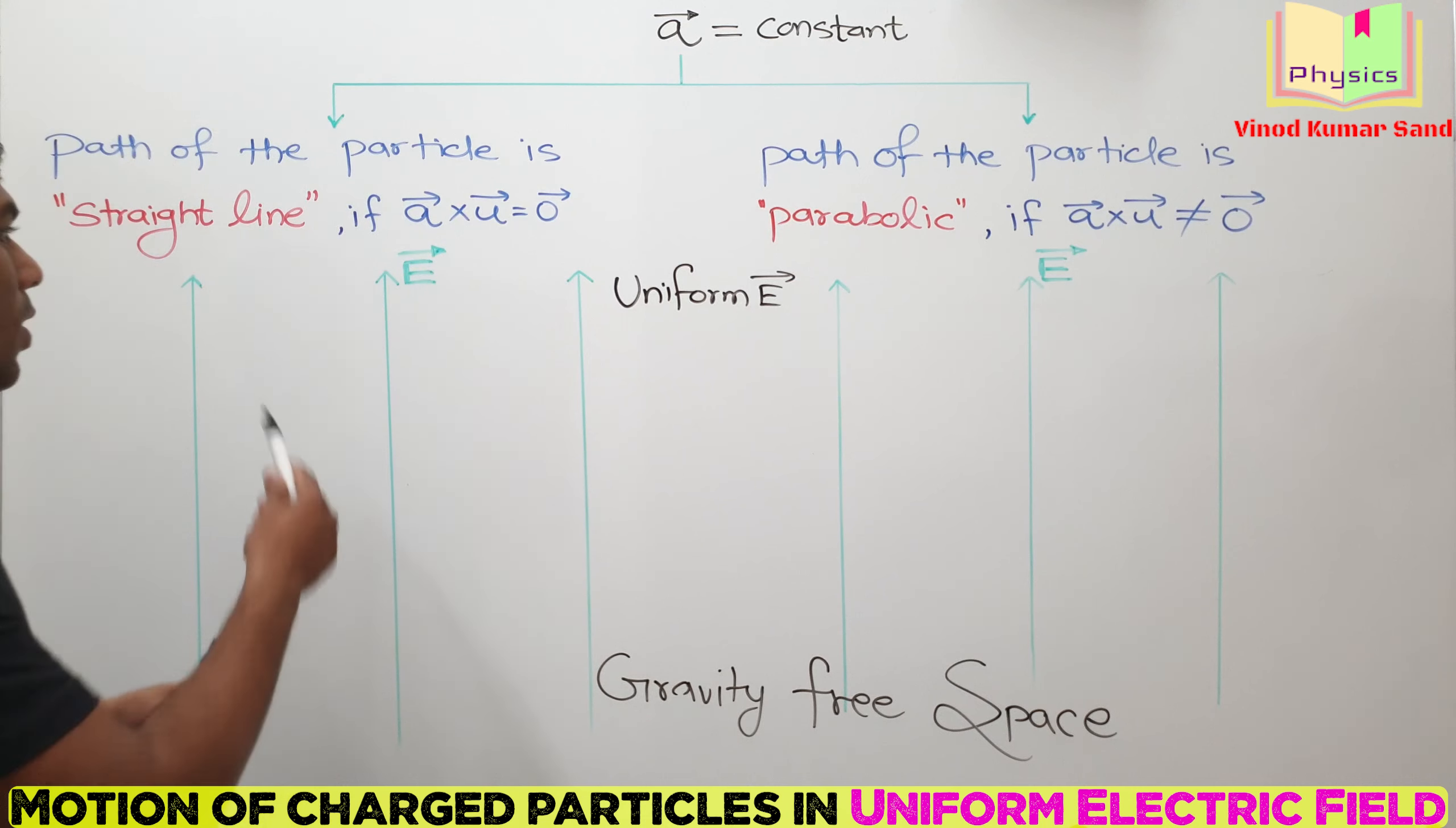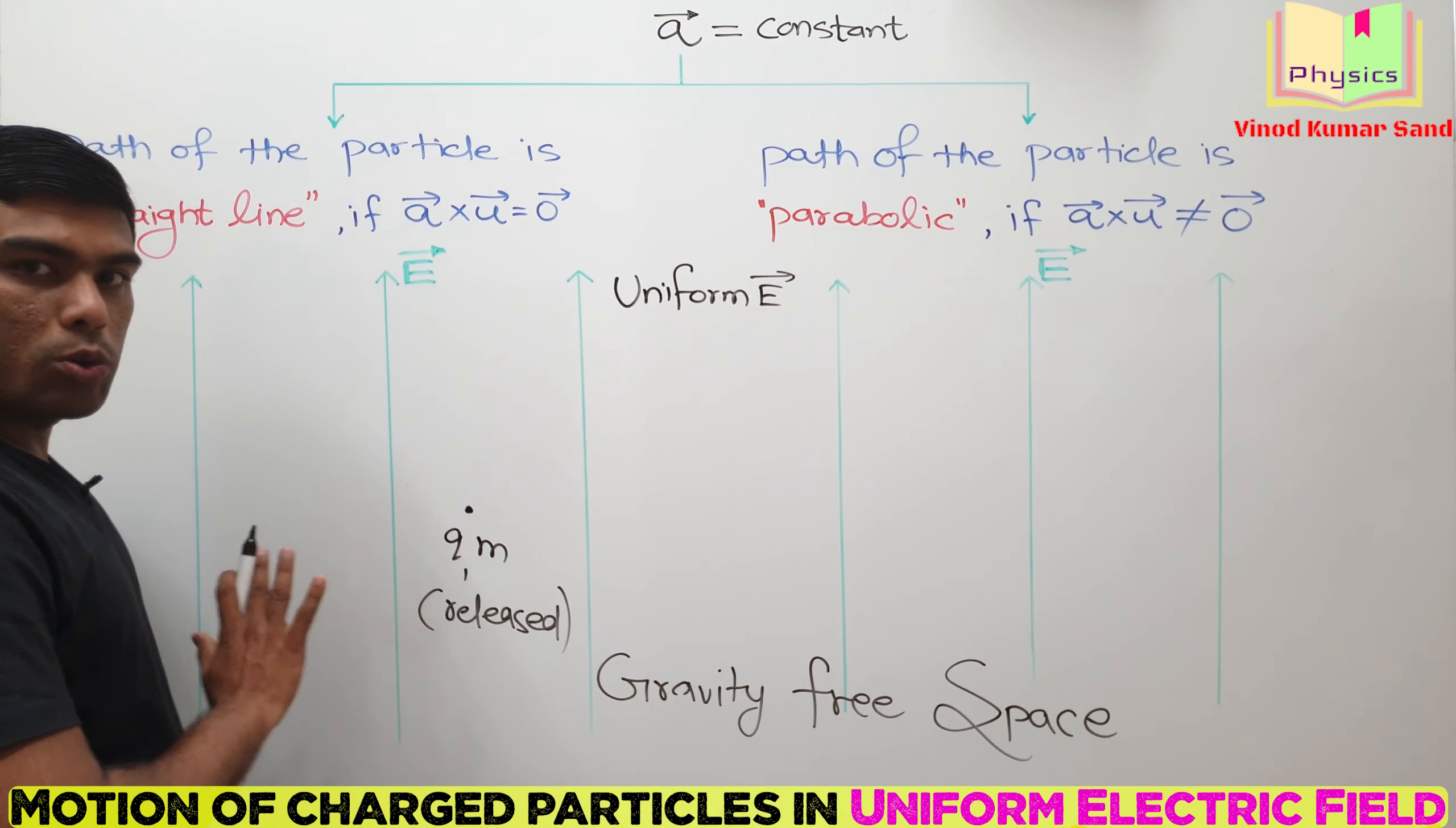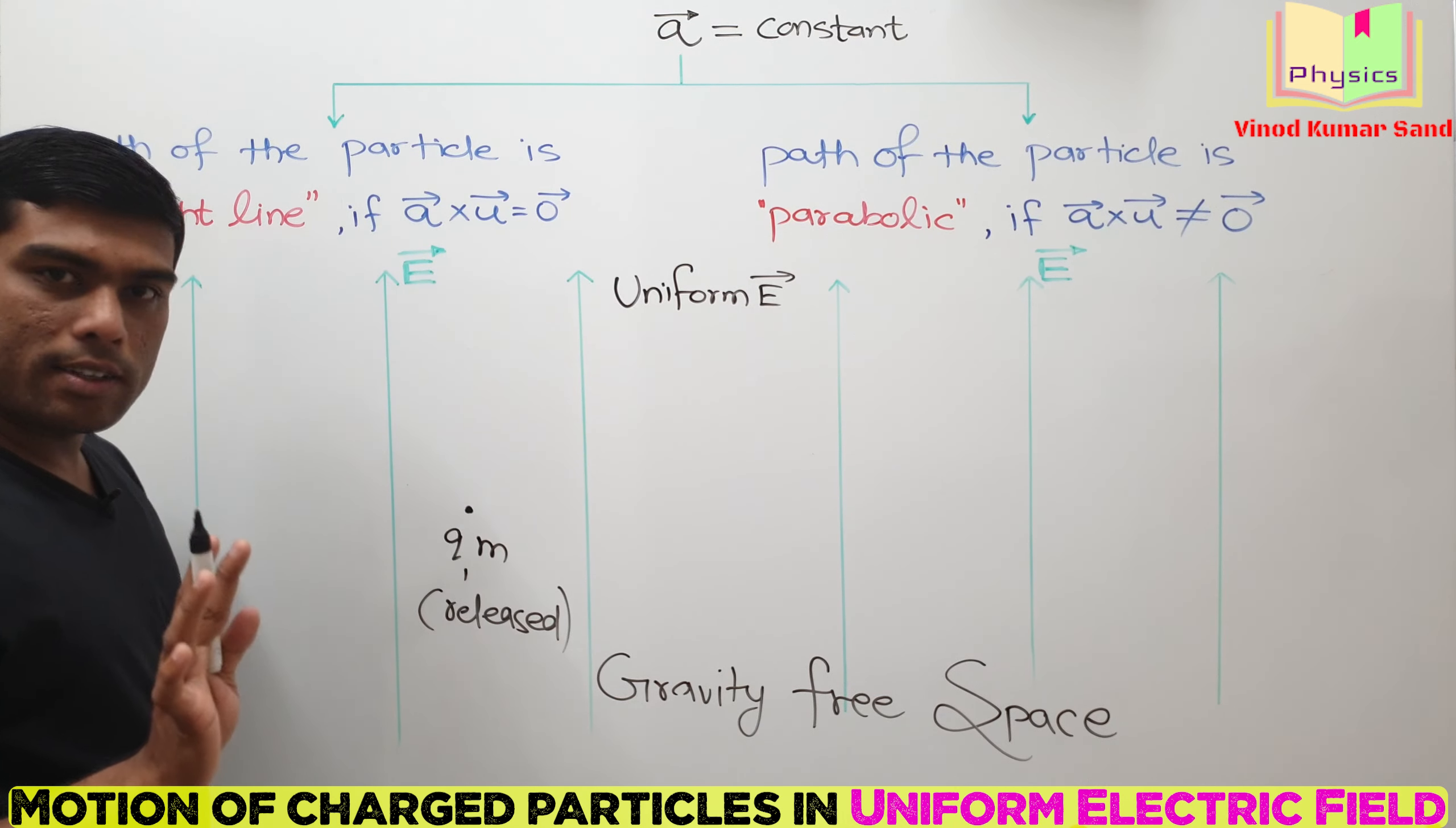Let's see the things on the board. Suppose here is a charged particle, charge Q and mass M. This particle is released in gravity-free space. There is no Mg, no air resistance, only force acting on this particle is due to the electric field.